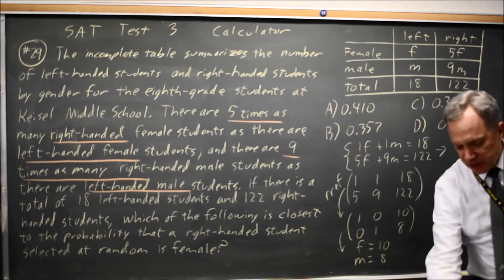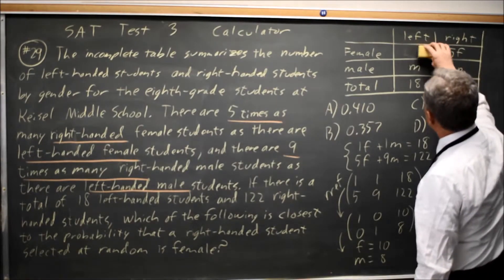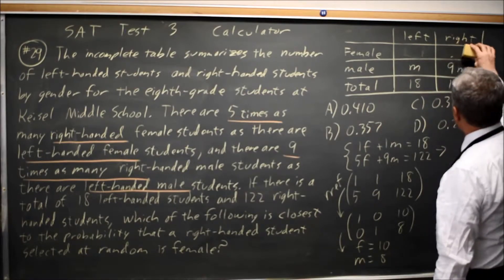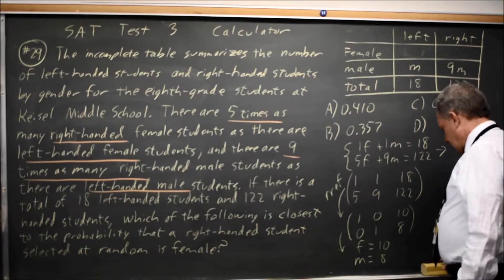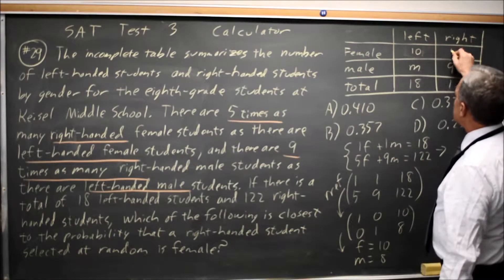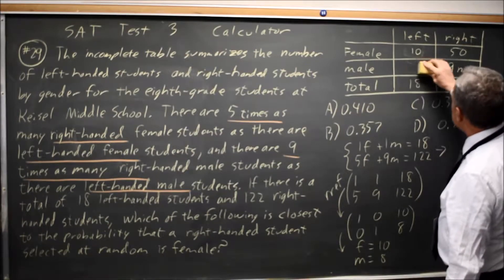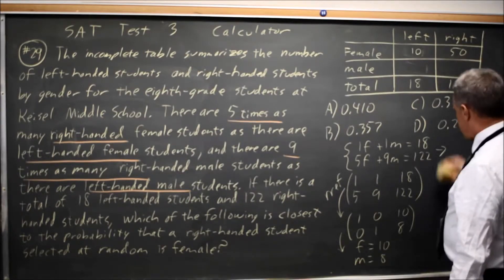And if I fill those in, F is 10, 5F is 50, and then for M, M is 8, and 9M will be 72.